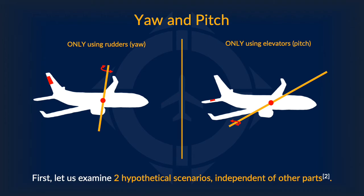In actual flight, one must combine all three rotations in order to have a coordinated turn. In order to better help you understand this, I'll explain this concept based on another YouTube video that explained this beautifully — the link will be in the credits. I'll be going over a shorter version of his explanation. We will first look at two hypothetical scenarios: the first is using only the rudders to turn, and the second is using only the elevators to achieve a turn.